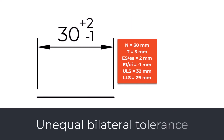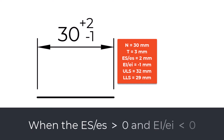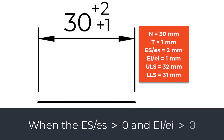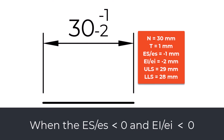Unequal bilateral tolerance: these specify a nominal value and the limit deviations. There are three possible cases. The first is when ES is greater than zero and EI is less than zero. The second is when ES is greater than zero and EI is also greater than zero. The third is when ES is less than zero and EI is also less than zero.